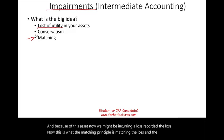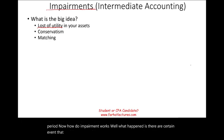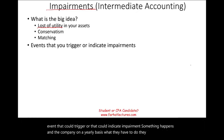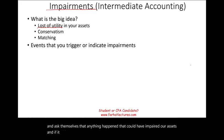How does impairment work? There are certain events that could trigger or indicate impairment. On a yearly basis, the company must ask themselves: did anything happen that could have impaired our assets? If it did, they perform the impairment test, which we'll discuss through a two-step process.